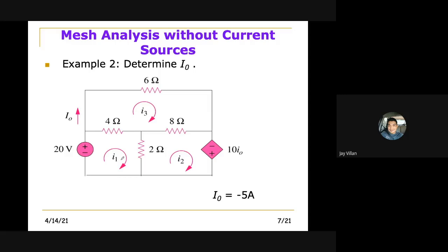In this case, we have two voltage sources, and one is a dependent voltage source, a current dependent voltage source, dependent to the value of I0. And we have three meshes, I1, I2, and I3.